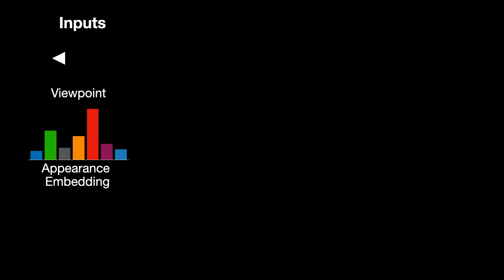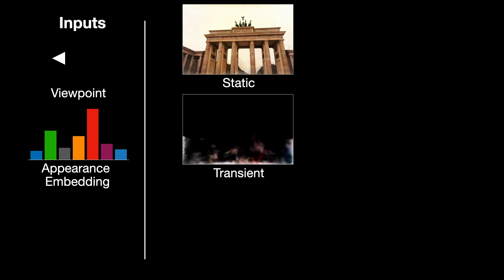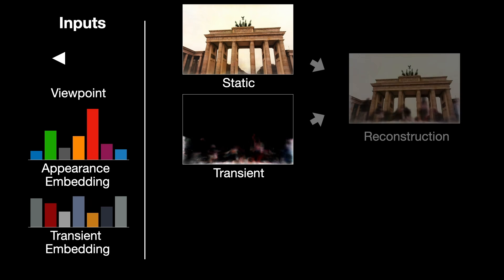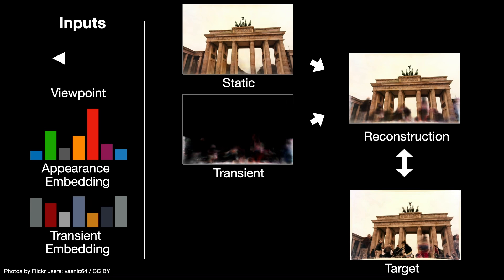Here's what our system looks like during training. The input to our system is just a viewpoint — the location of a camera — and an appearance embedding, which is just a vector in a low-dimensional space. From these two inputs, we generate a static reconstruction of the scene, which represents the parts of the scene that are permanent. We also generate a transient reconstruction of the scene, which is conditioned on a second transient embedding, and this is meant to capture temporary structure specific to one particular image. To generate a final image, we composite the static and transient reconstructions together, and this model is trained by minimizing reconstruction error against the target image from our dataset.